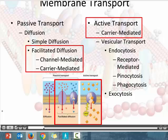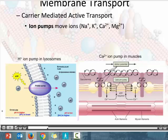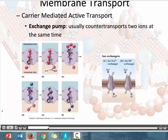Facilitated diffusion moves substances across the membrane down that substance's concentration gradient. Carrier-mediated transport can also be active, using active transport proteins that move substances against the concentration gradient, which requires energy. Generally, when we use carrier-mediated transport that is active transport, we are using a protein called a pump. We've got ion pumps, which move ions across the membrane, and exchange pumps, which generally move two items in opposite directions across a membrane.